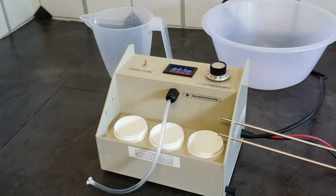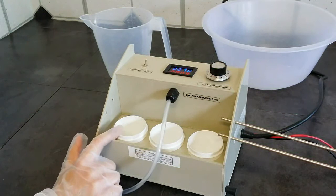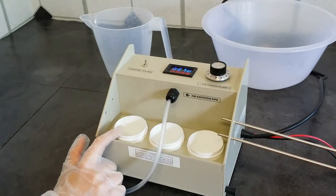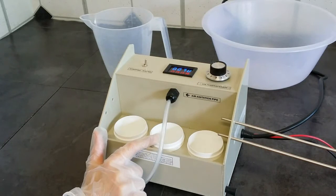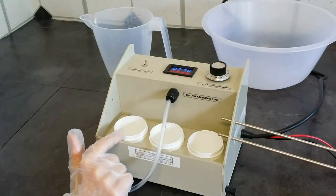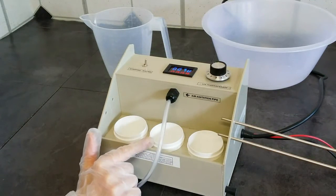Now you can pour your solutions of choice into the tanks. Usually, but not necessarily, the left tank is used for the cleaning solution to clean your object. The middle tank is used for the tap water in order to rinse off any remains of the cleaning solution before you electroplate your object.